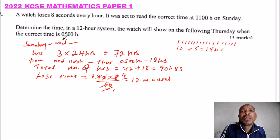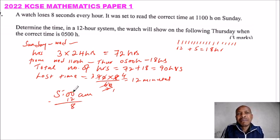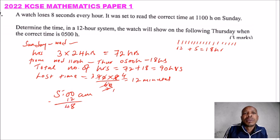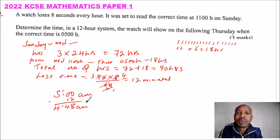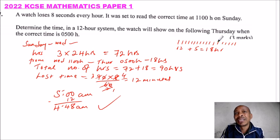The correct time is 05:00 a.m. Since the watch has lost 12 minutes, we subtract 12 minutes from 05:00. Borrowing gives us 4 hours and 48 minutes. Therefore, in the 12-hour system, the watch will be showing 4:48 a.m. Over the period from Sunday to Thursday, the watch had lost 12 minutes.